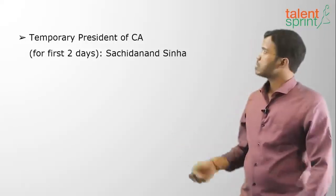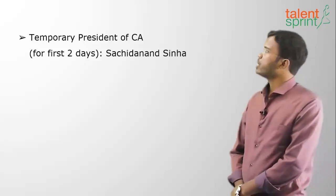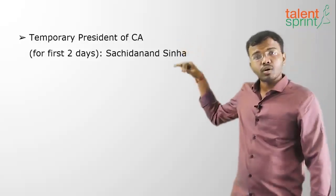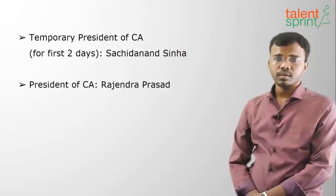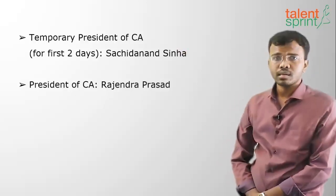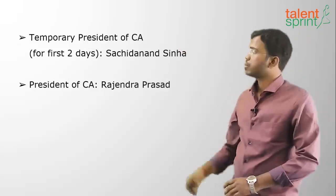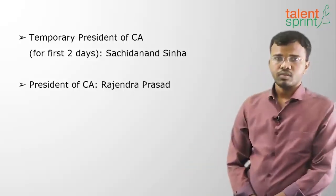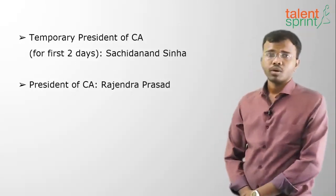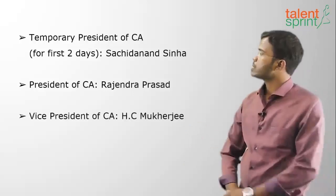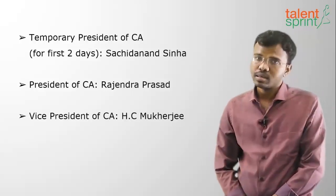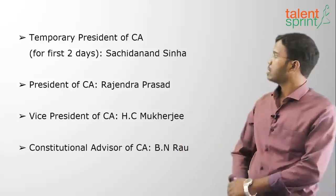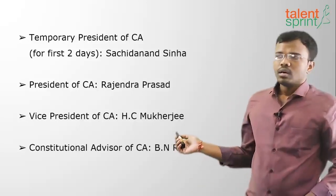For the first two days, Dr. Sachidananda Sinha was the temporary president of the Constituent Assembly. From the third day onward, Dr. Rajendra Prasad — who later became the first President of India — served as president of the Constituent Assembly until 26th November 1949. The vice president of the Constituent Assembly was Harendra Kumar Mukherjee (H.C. Mukherjee), and the constitutional advisor was Benegal Narsing Rao (B.N. Rao).